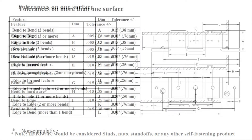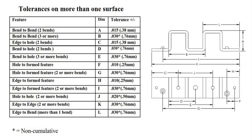When looking at tolerances over multiple surfaces on this chart, we can see how tolerance changes with multiple bends. This is a result of the combination of material stretching and process capability of the equipment.